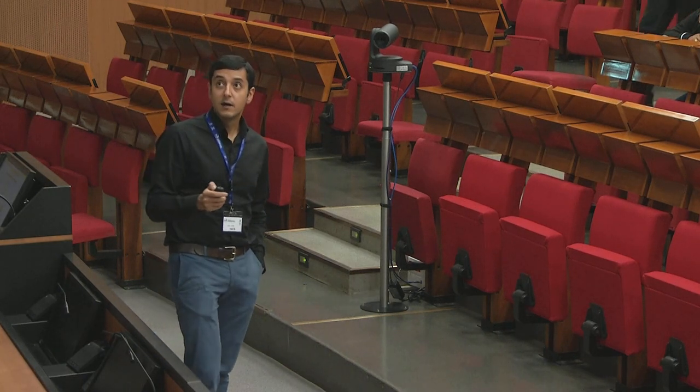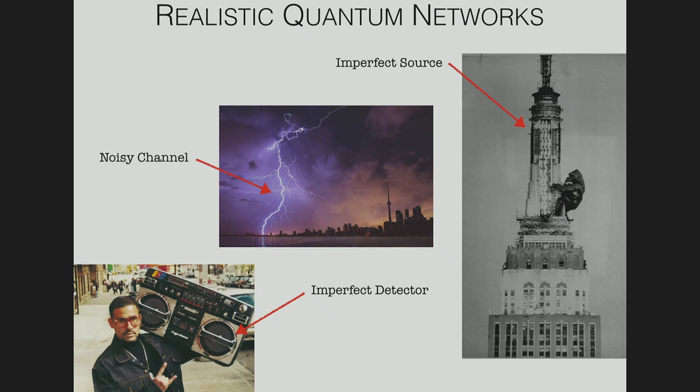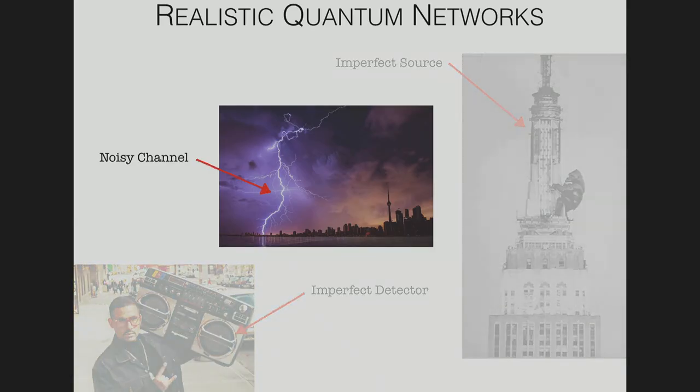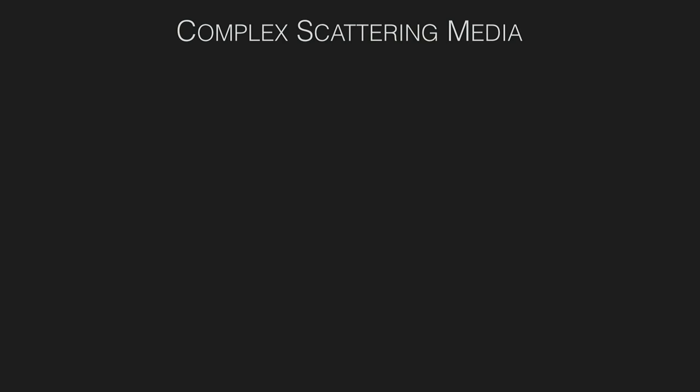Let's start with unscrambling entanglement through a complex medium. With quantum communications, I like to think that we are at an early stage, harking back to the days of classical communication when we struggled with things like storms and bad detectors. We have to overcome similar problems with quantum communications; for example, dealing with noisy channels is a huge issue.